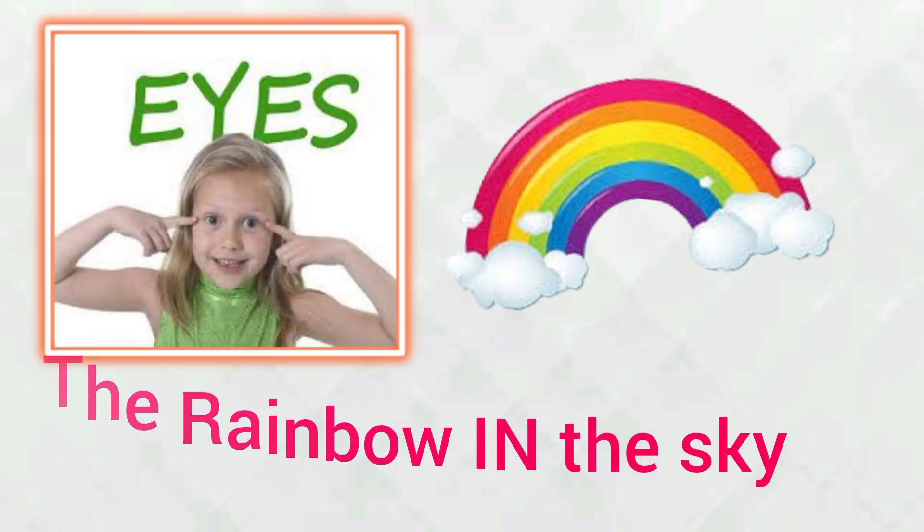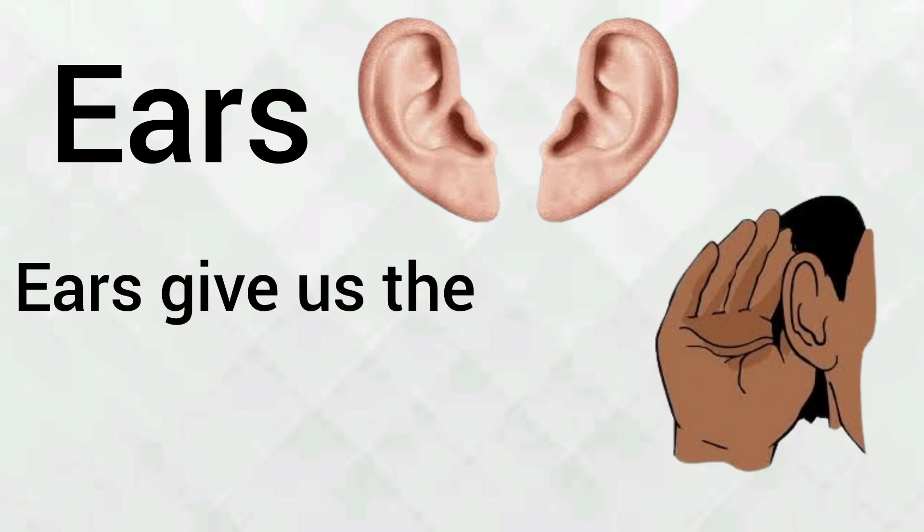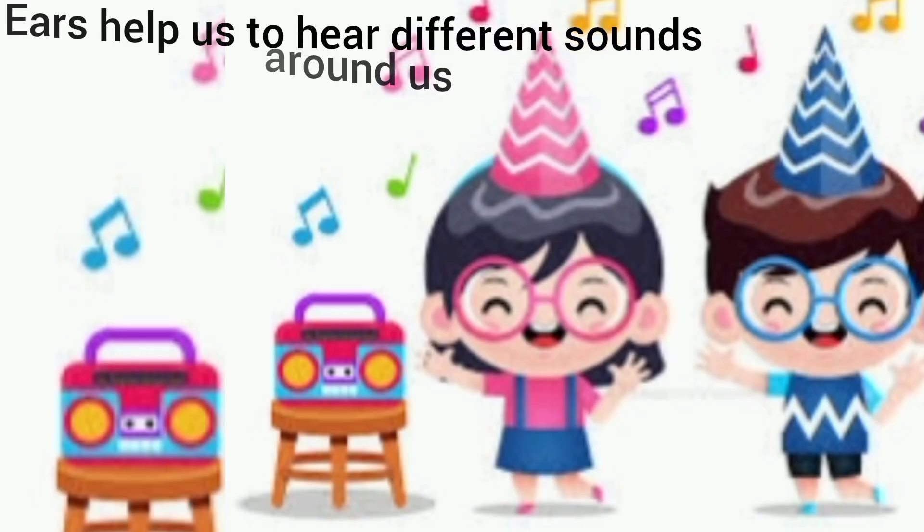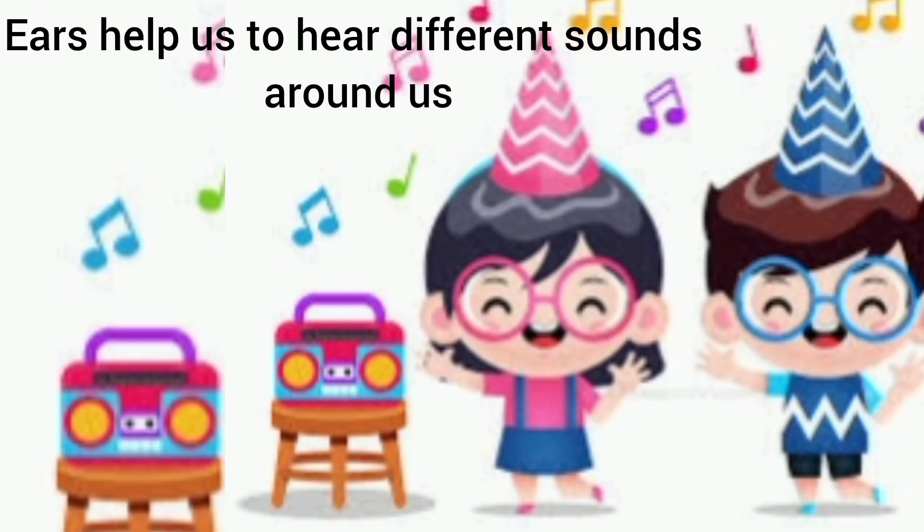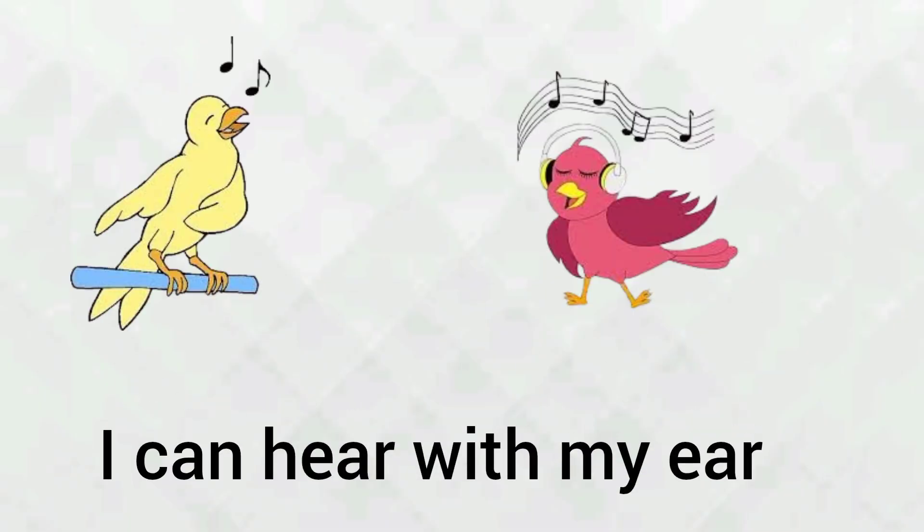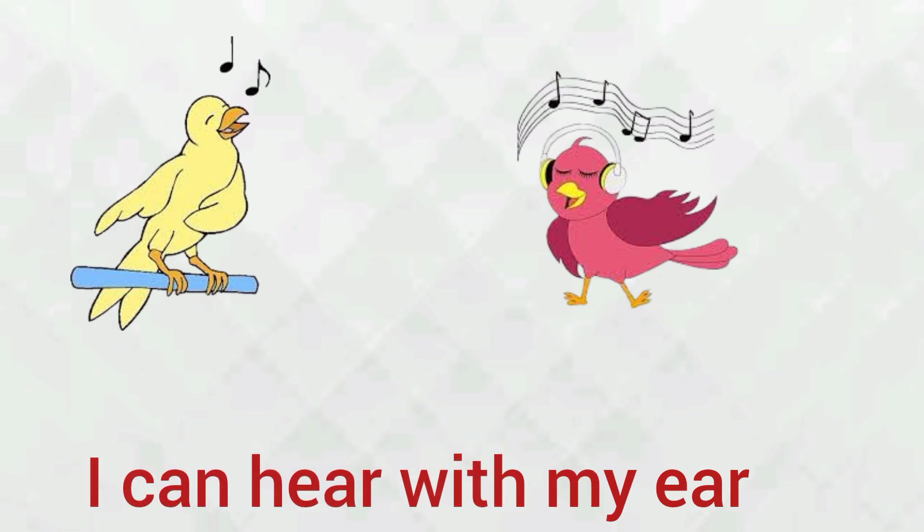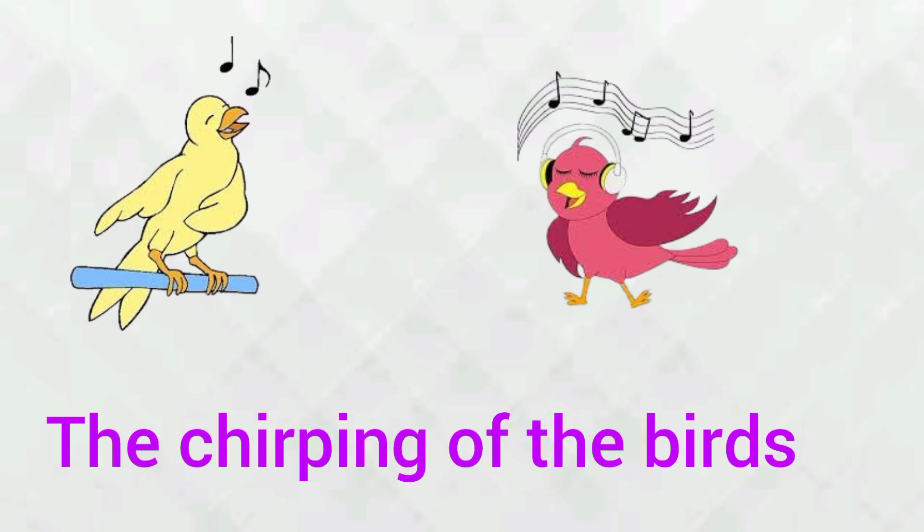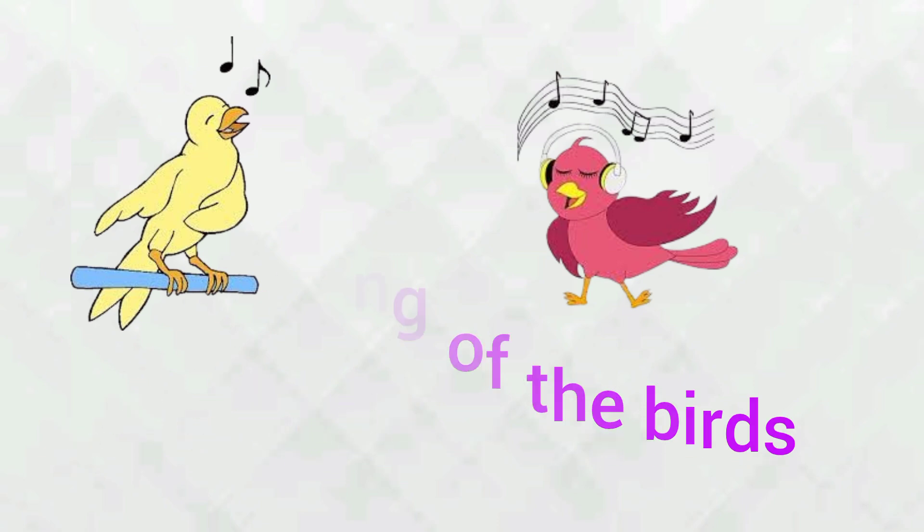Second sense organ is ears. Ears give us the sense of hearing. Ears help us to hear different sounds around us. I can hear with my ears the chirping of the birds.